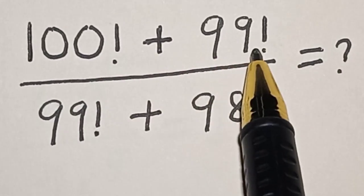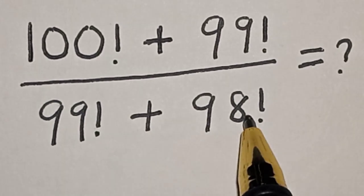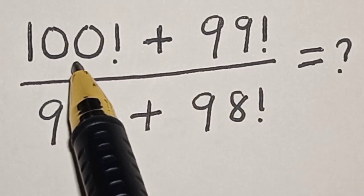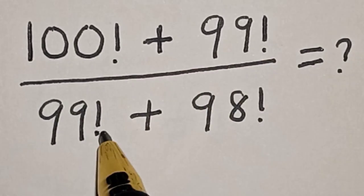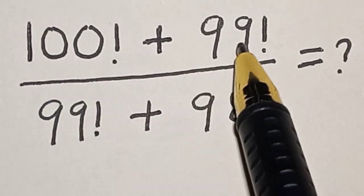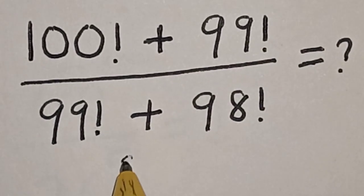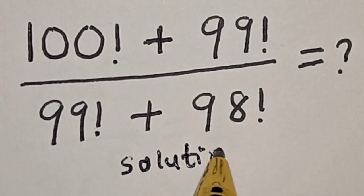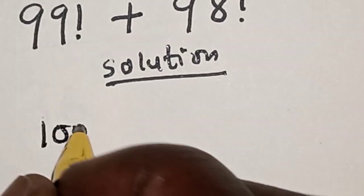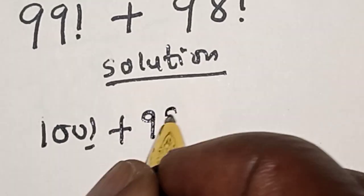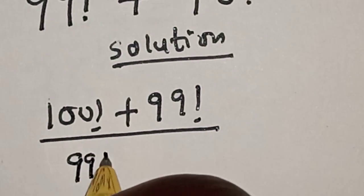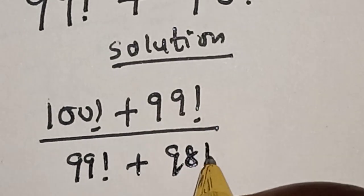Hi everyone, welcome to my class. In this class we want to find the value of 100 factorial plus 99 factorial, divided by 99 factorial plus 98 factorial. Before we proceed, please don't forget to like, share, comment, and subscribe. Solution: we have the given question — 100 factorial plus 99 factorial divided by 99 factorial plus 98 factorial.